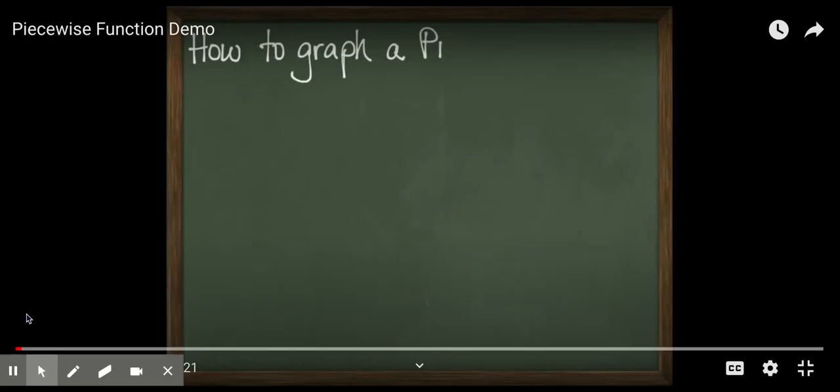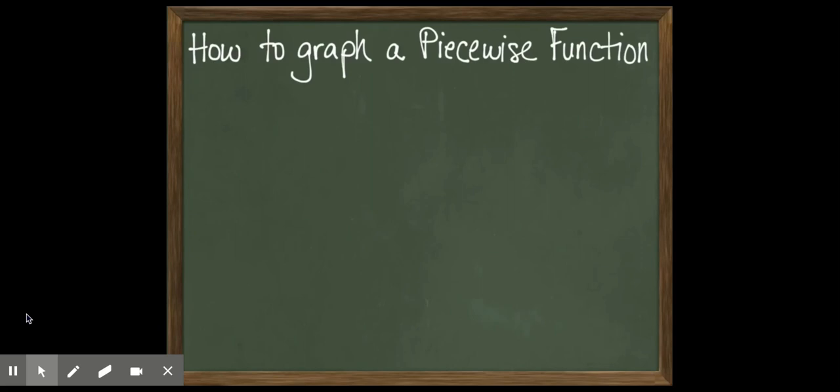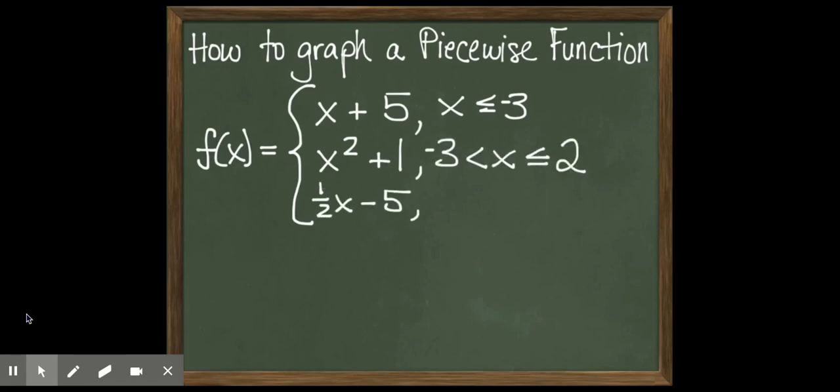This is your quick demonstration of how to graph a piecewise function. We're going to use an example function. F of x is going to equal x plus 5 for x less than or equal to negative 3. It's going to equal x squared plus 1 for x greater than negative 3 and less than or equal to 2. It's going to equal 1 half x minus 5 for x greater than 2.